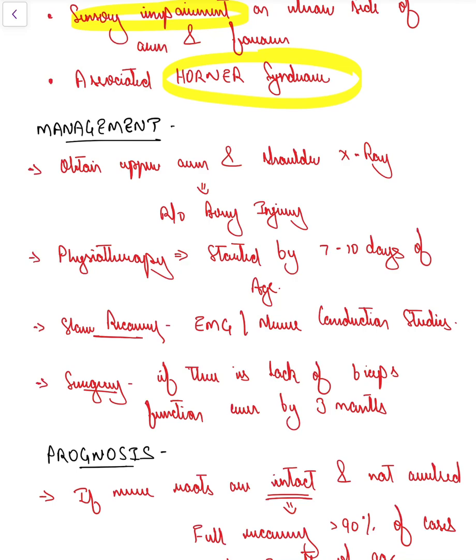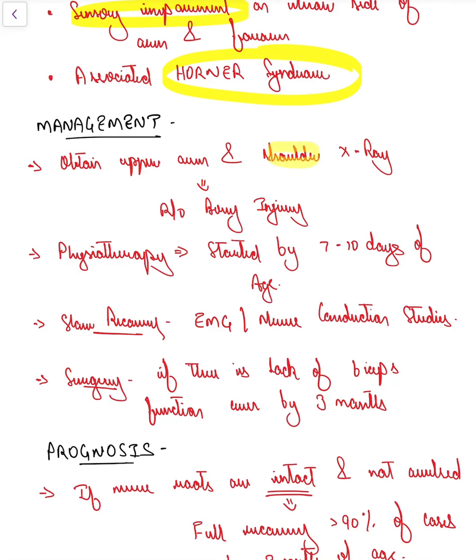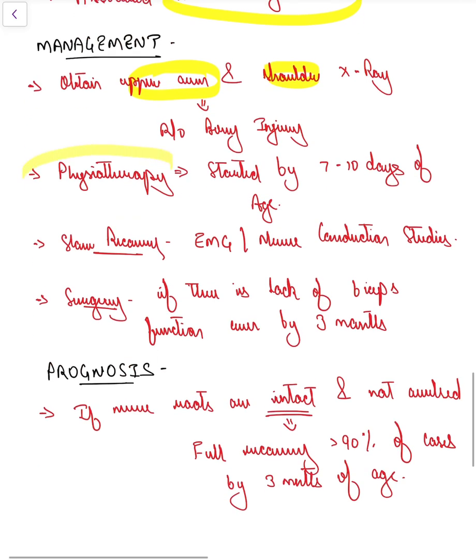Coming to management, since there has been difficulty in delivery, we need to search for other associated injuries. We need to obtain X-ray of shoulder and upper arm to rule out bony injury, and carry out chest examination to look for distress and rule out diaphragmatic injury.